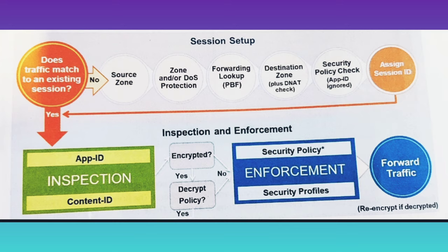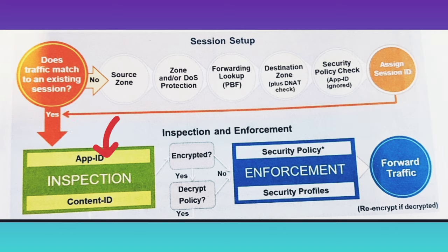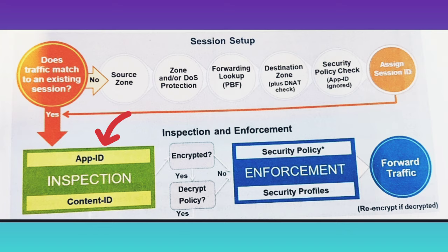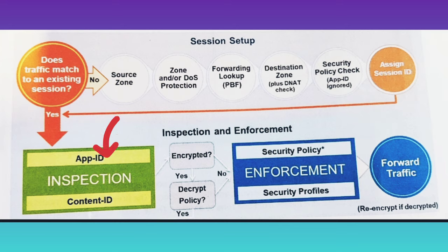The next stages are checked against the existing session ID or policy. Packets are first checked against App-ID, Content-ID, and User-ID. The App-ID and Content-ID engine can evaluate application behavior, characteristics, and relative risk. Applications and their functions are identified via multiple techniques including application signatures. Based on this inspection, the packet payload is checked.